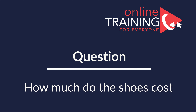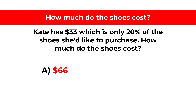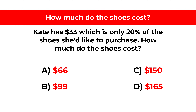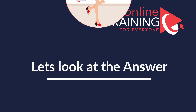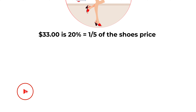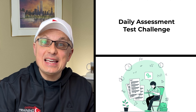Kate has $33, which is only 20% of the cost of shoes she'd like to purchase. How much do the shoes cost? Choices: A) $66, B) $99, C) $150, D) $165. Since 33 is 20% or one-fifth of the shoe price, the total cost is 33 × 5 = $165. The correct answer is choice D.